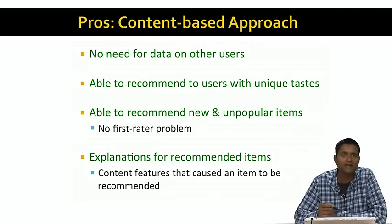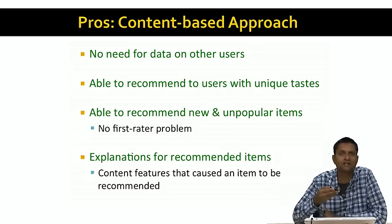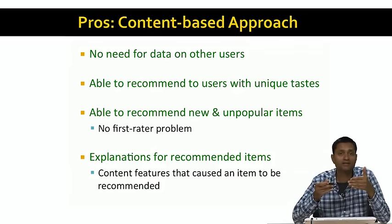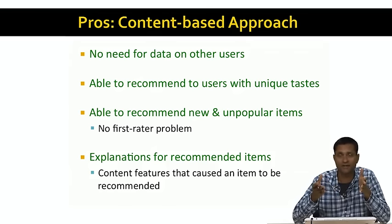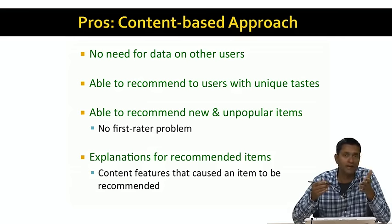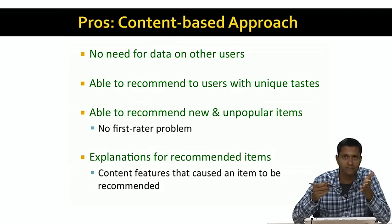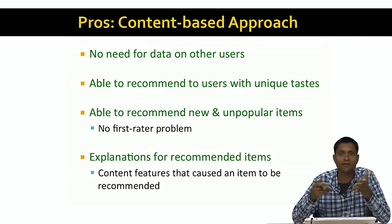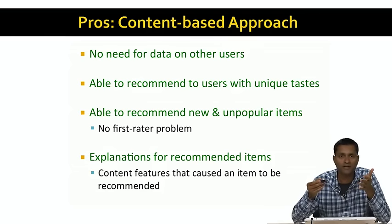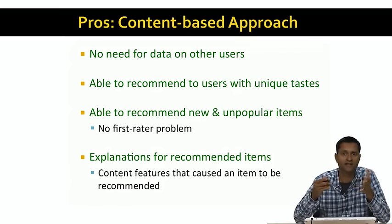Finally, whenever the content-based approach makes a recommendation, you can provide an explanation to the user for why a certain item was recommended — by listing the content features that caused it. For example, if you recommend a news article using a content-based approach, you might be able to say: 'In the past, you've spent a lot of time reading articles that mention Syria, and that's why I'm recommending this article on Syria to you.'